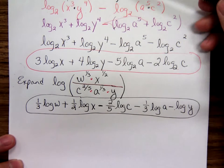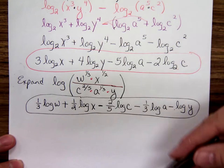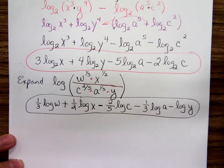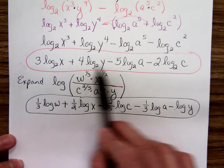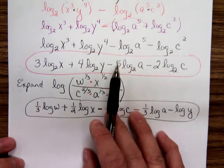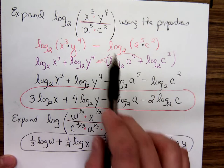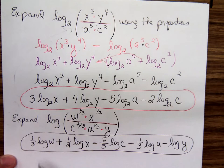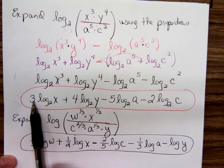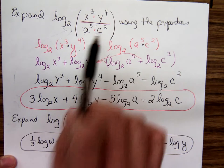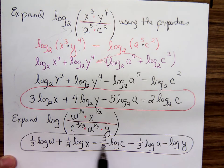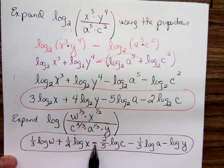In math you do it one way, then you do it backwards. We're going to expand logarithms and then condense logarithms. Could you take this answer and go backwards? Sure. The numbers in front of the L are the exponents. The stuff that has a minus in front goes on the bottom. The stuff with a plus in front goes on top.